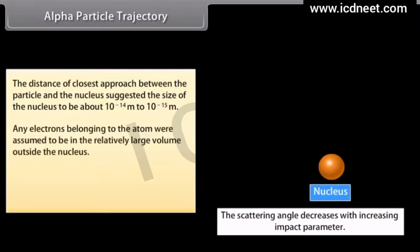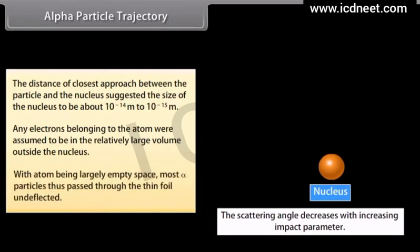Any electrons belonging to the atom were assumed to be in the relatively large volume outside the nucleus. With the atom being largely empty space, most alpha particles thus passed through the thin foil undeflected.